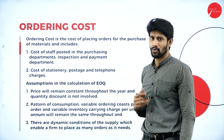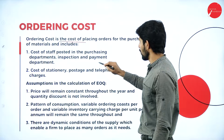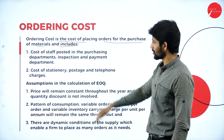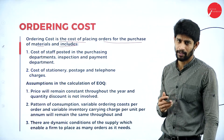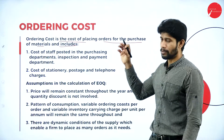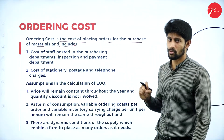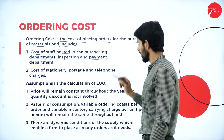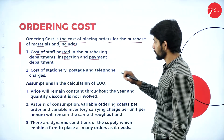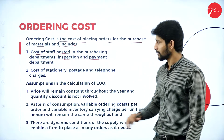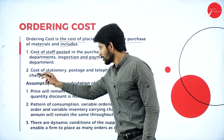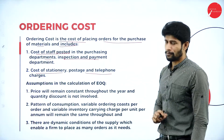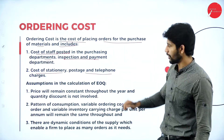Ordering cost is the cost of placing orders for the purchase of materials — whatever cost we are incurring to purchase the material. It includes the cost of staff posted in the purchasing department, inspection and payment department, and cost of stationery, postage and telephone charges with respect to ordering. These all come under ordering cost.